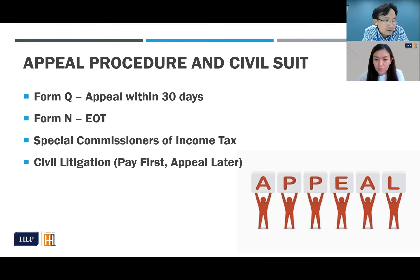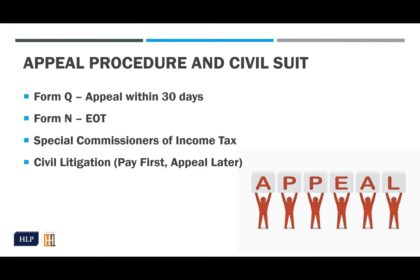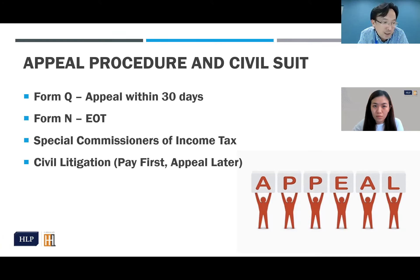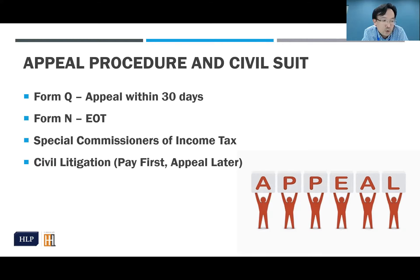Form Q is an appeal against the assessment to the Special Commissioners of Income Tax, but it is to be submitted not to the courts but to the IRB branch where the taxpayer maintains their tax file. Four copies of Form Q are to be submitted to the IRB. The third procedural rule is that the grounds of appeal must be stated clearly and succinctly in the notice of appeal.